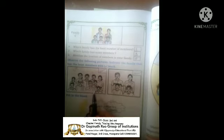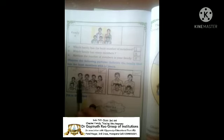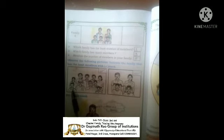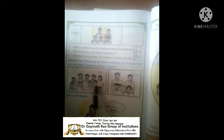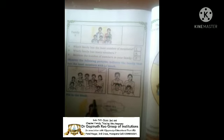In a joint family or big family, the members are: grandfather, grandmother, father, mother, uncle, aunt, elder sister, elder brother, younger sister and younger brother. These are the joint family or big family. Do you understand children?